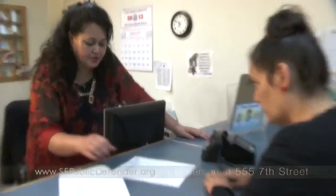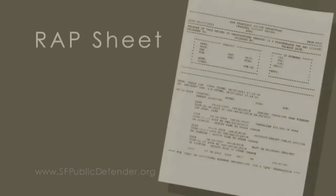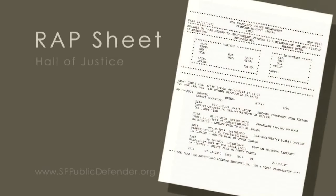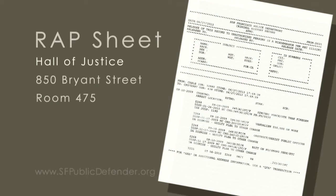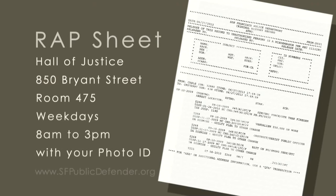Next, you will obtain a copy of your rap sheet, which is a record kept by law enforcement of your arrests and convictions. You can get your rap sheet by going to the Hall of Justice Police Department Identification Bureau at 850 Bryant Street, room 475 on the fourth floor. The bureau is open Monday through Friday from 8 a.m. to 3 p.m. The Hall of Justice is located one block away from the Public Defender's office. You will need to bring your photo ID.